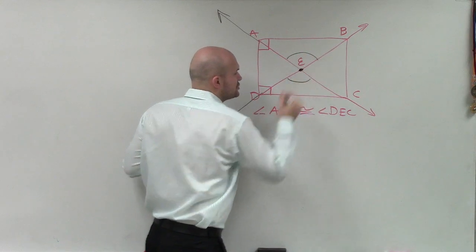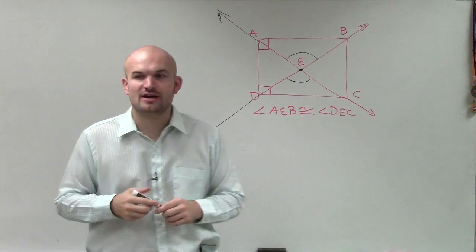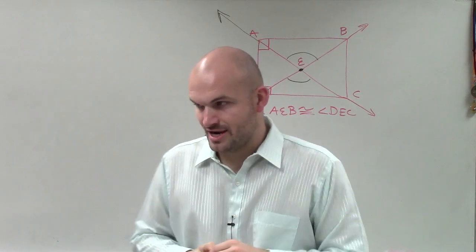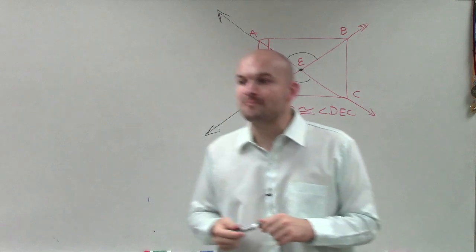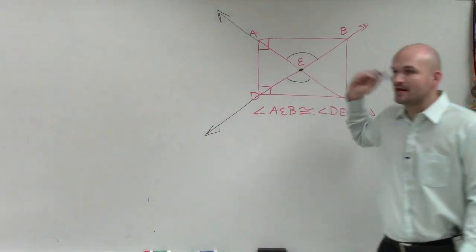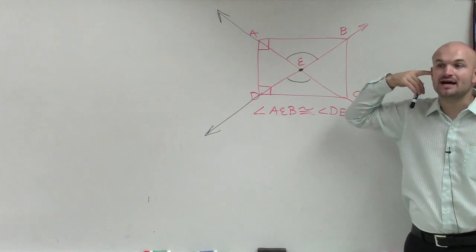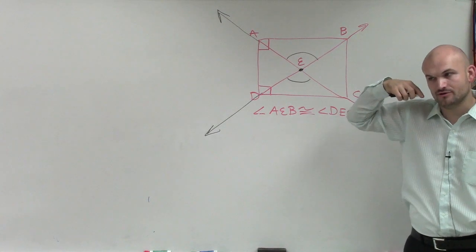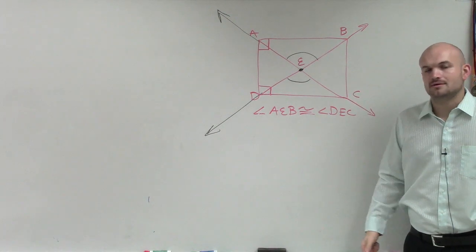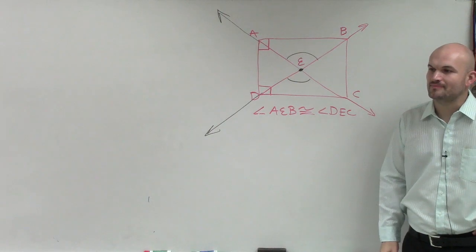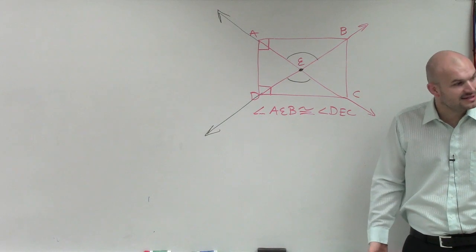And these two angles share a vertex, but do not share a side, right? Dennis, do you remember what we call two angles that are formed by intersecting angles that share a vertex but do not share a side? Kim, do you remember? Elizabeth, do you remember? Vertical. Vertical angles, exactly.